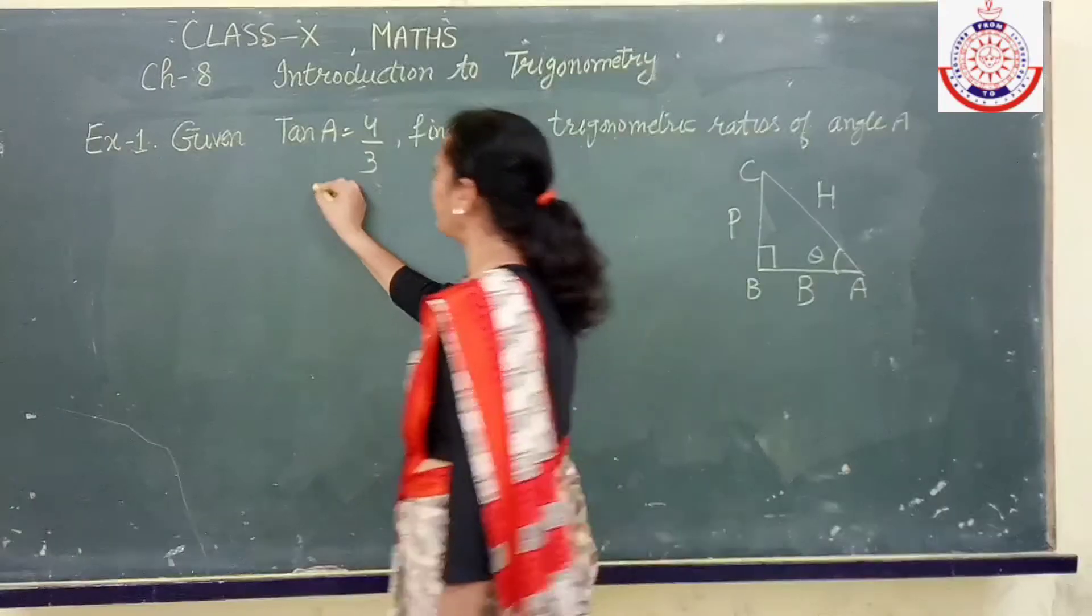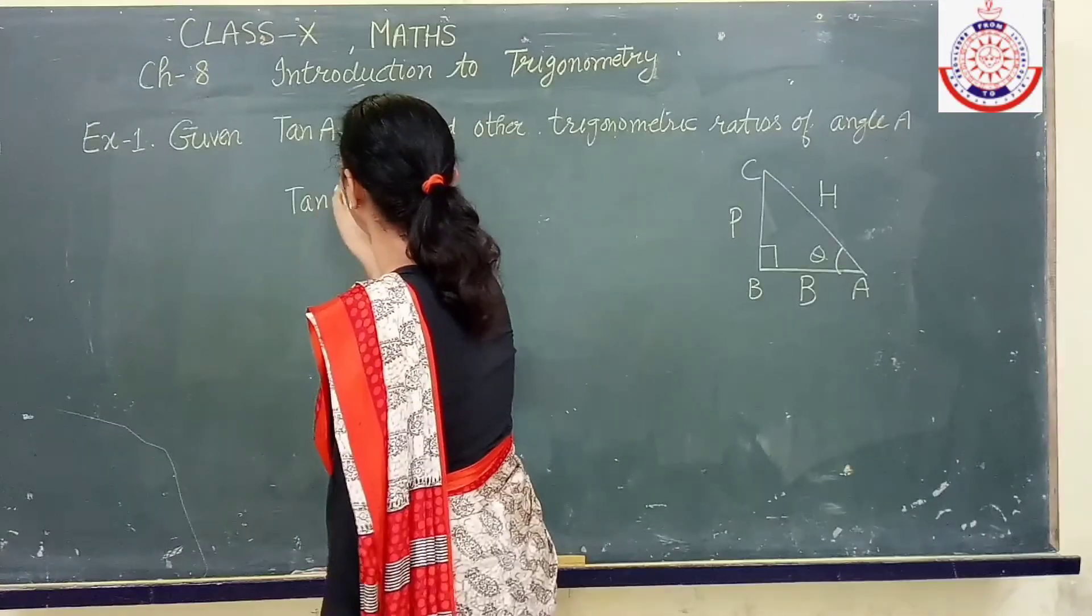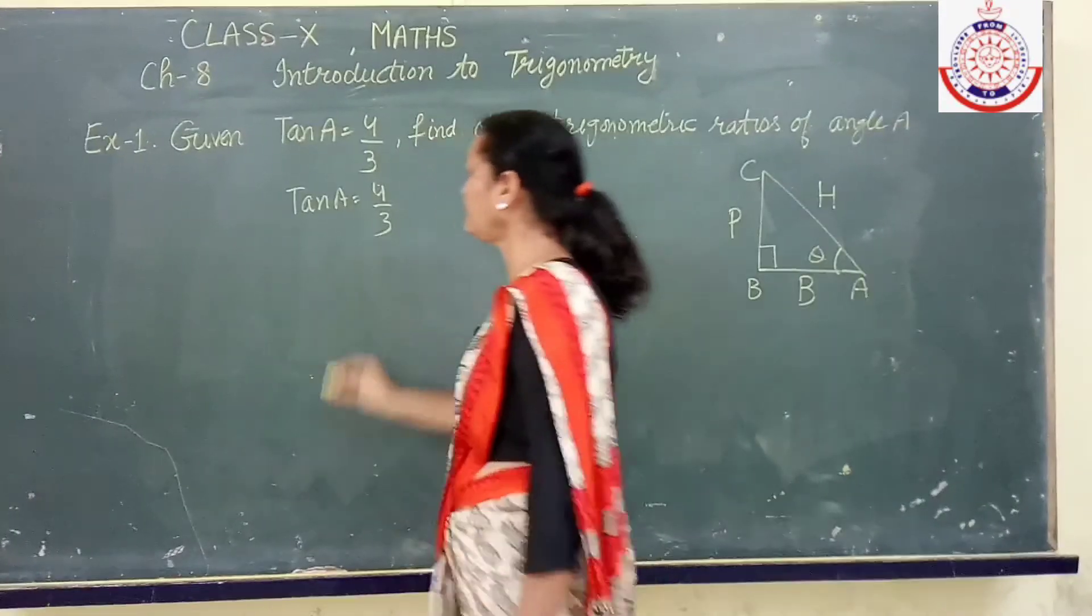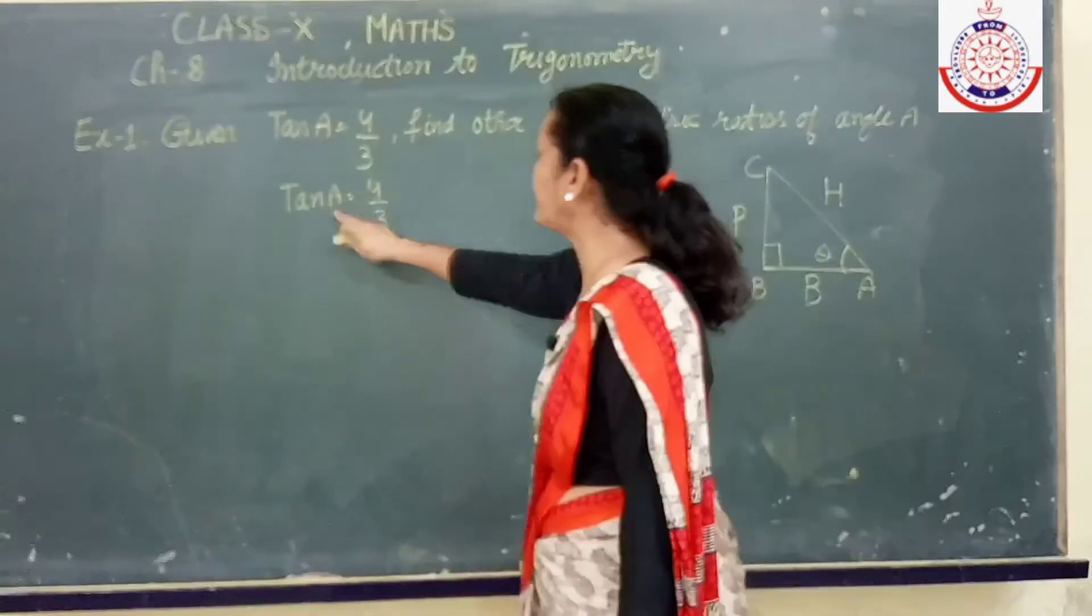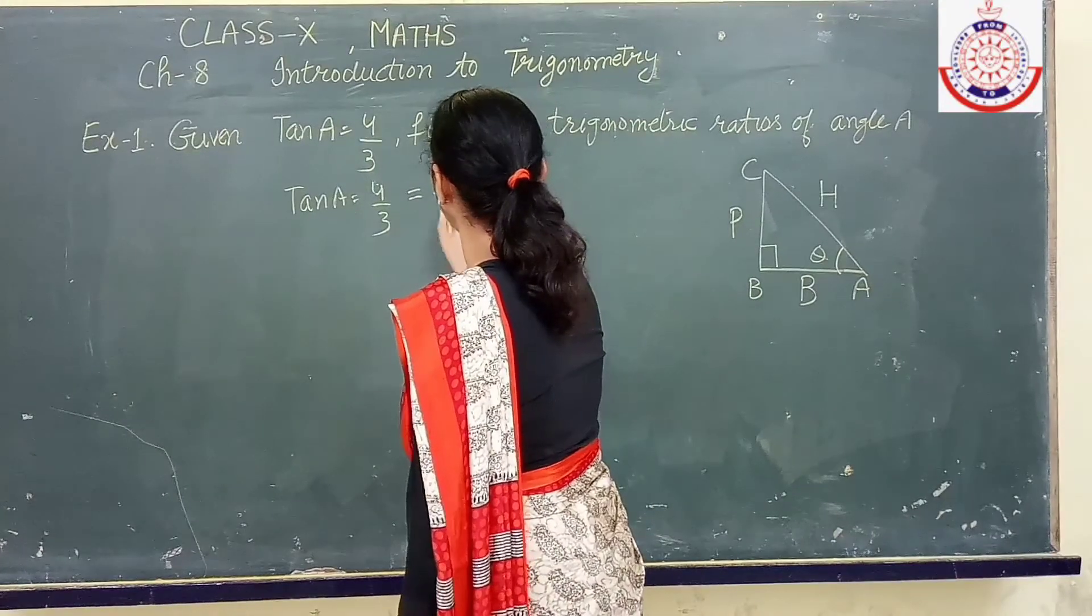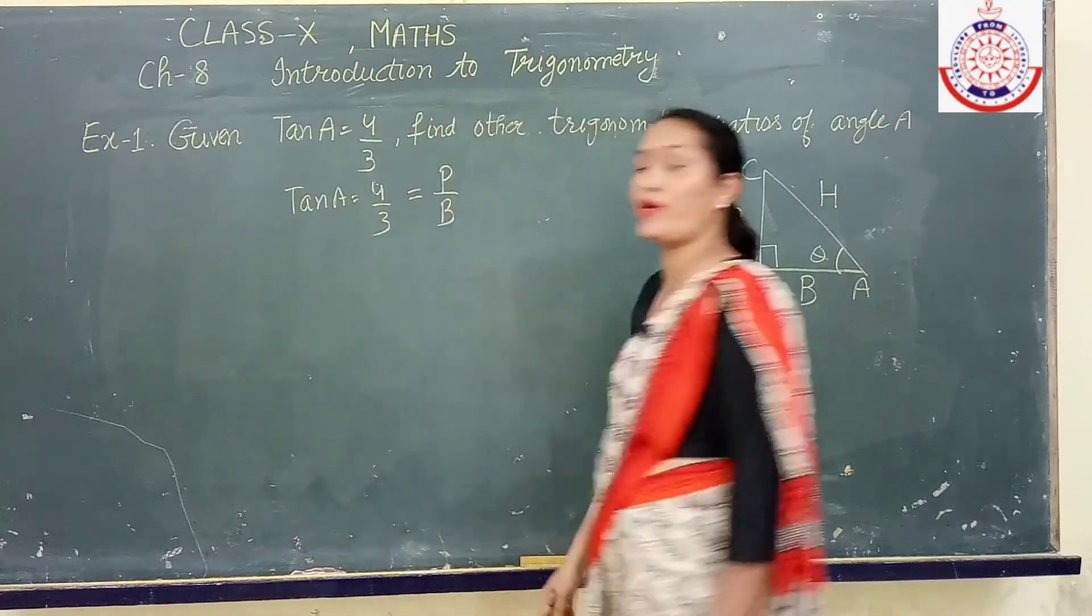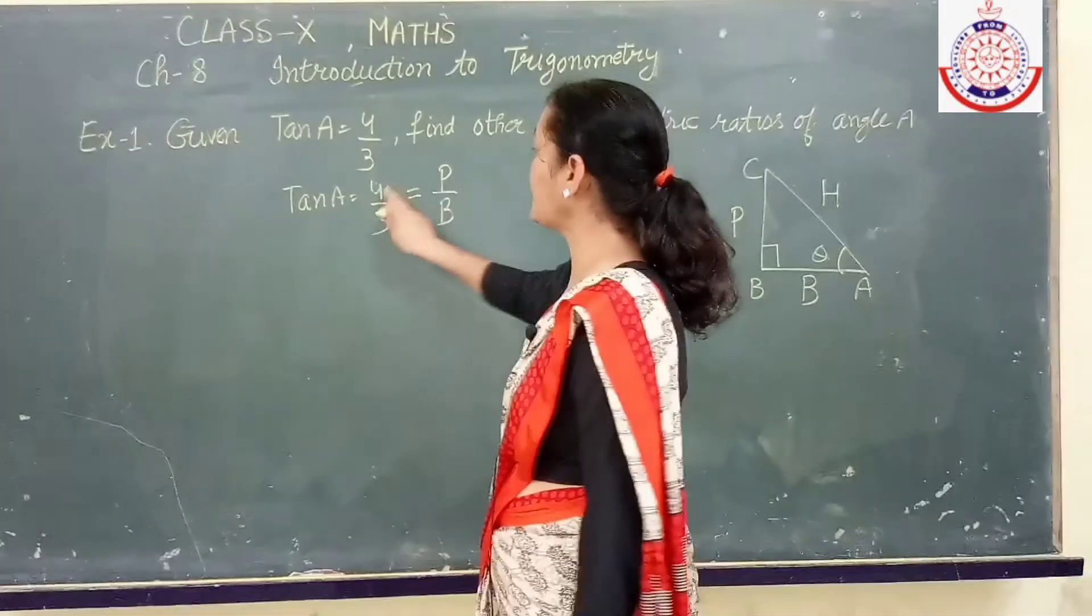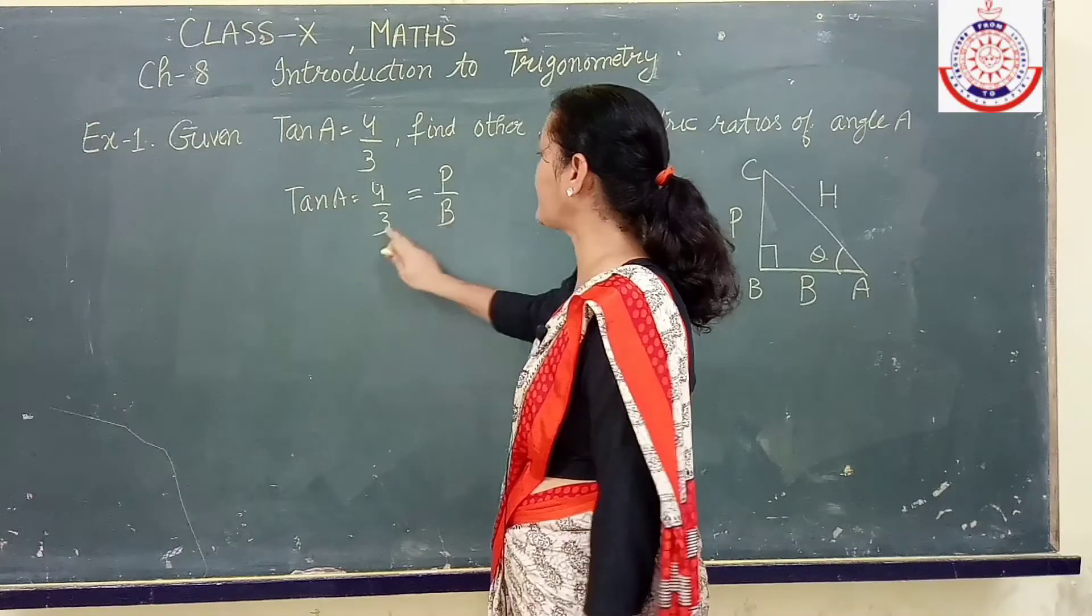Let us see how to do it. If it is given that tangent is 4 upon 3. Now tangent we have learnt, tangent is equal to perpendicular upon base. According to the formula which I have told you, that means perpendicular is 4 and base is 3.